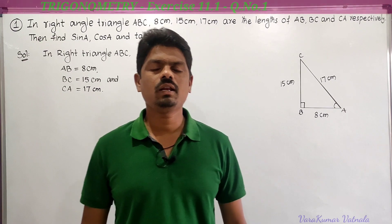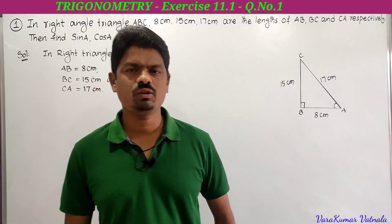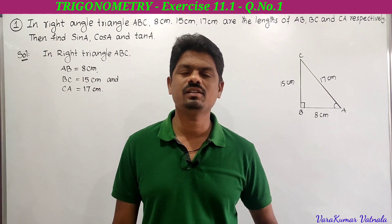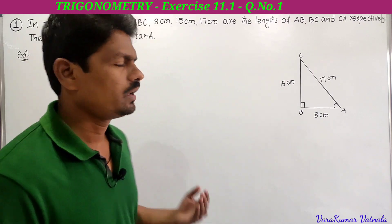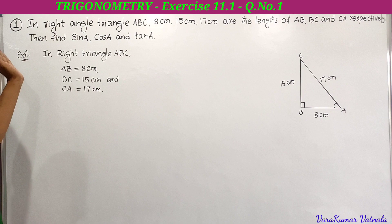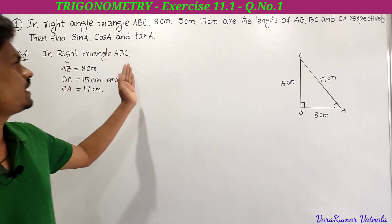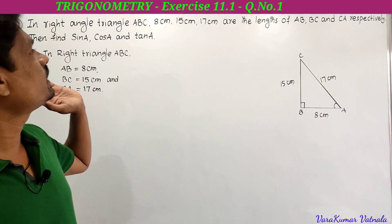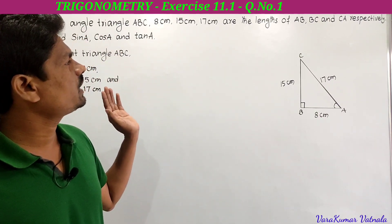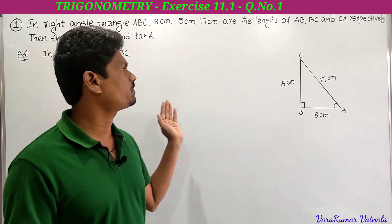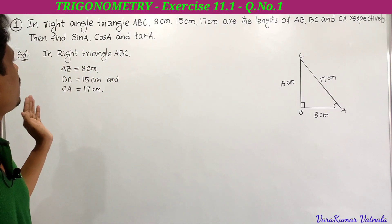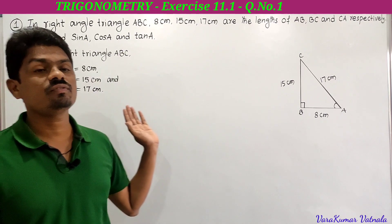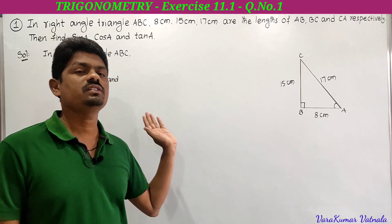Hi, hello! Welcome to my channel 'Learn More Math'. My name is Varag Kumar. Today we are going to solve a problem from trigonometry, Exercise 11.1, first problem. In a right angle triangle ABC, 8 cm, 15 cm, and 17 cm are the lengths of AB, BC, and CA respectively. Then find sin A, cos A, and tan A.